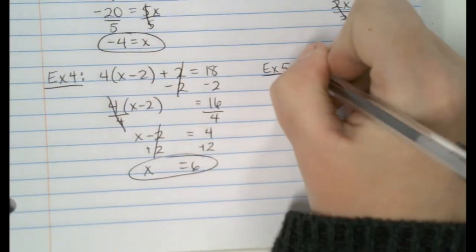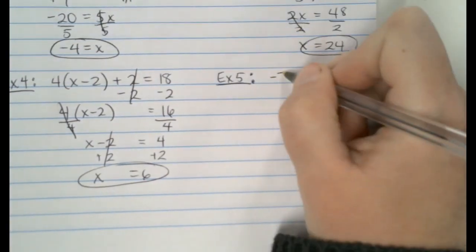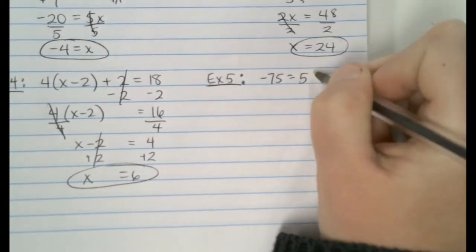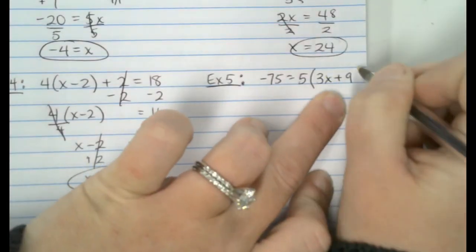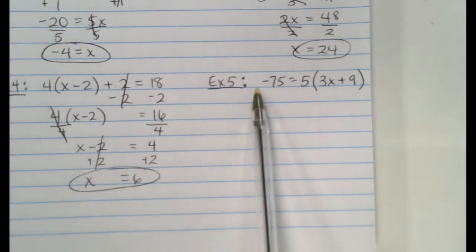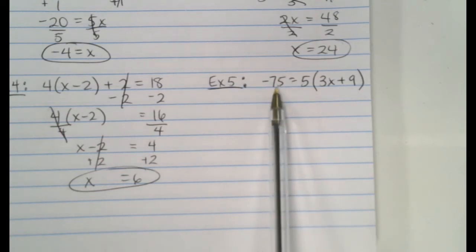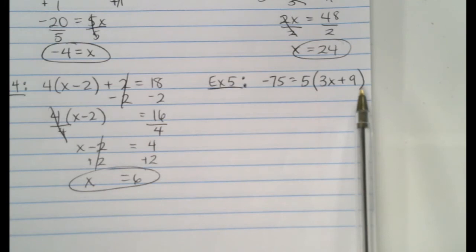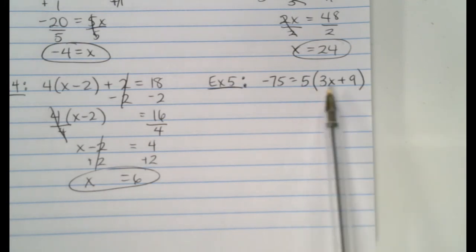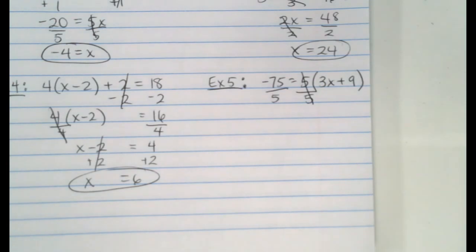Let's do another. I've only got 7 for us. I think that's sufficient. This one's going to be negative 75 equals 5 times 3x plus 9. So, we're going to do what with the negative 75? Nothing. It's on the other side of the equal sign. Leave it alone. So, out of these three things over here, the 5, the 3, and the 9, which one's furthest from x? The 5. How do we get rid of that 5? Divide. Divide by 5. What's negative 75 divided by 5?